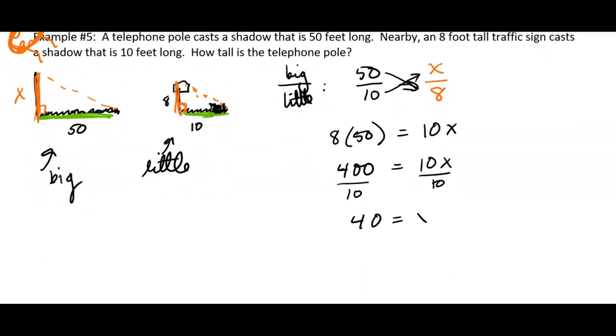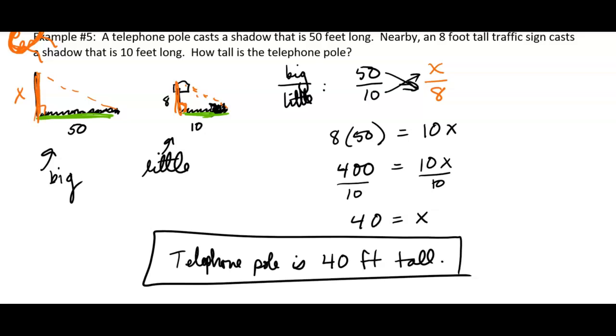40 equals X. So the telephone pole is 40 feet tall, or you could probably just put 40 feet.